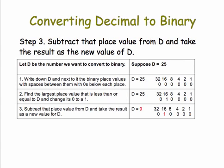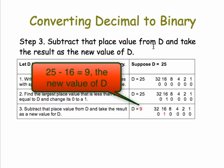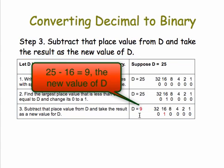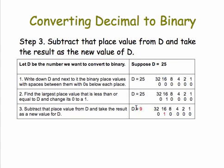Step three: subtract that place value, namely 16, from D, and make the result the new value of D. So 25 minus 16 gives us 9, and I'm putting the 9 there. That gives us a new value for D.